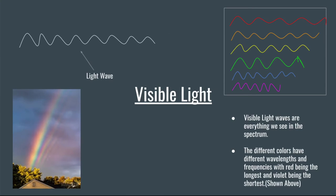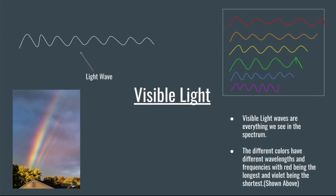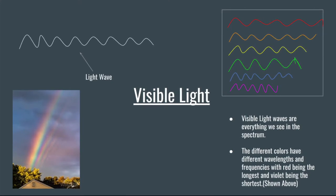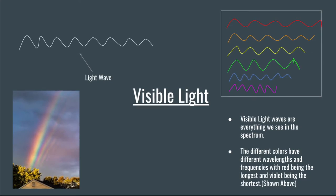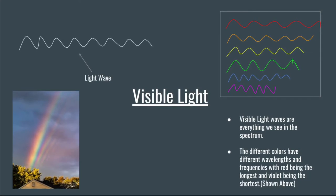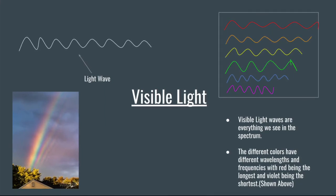Visible light rays have wavelengths from 400 nm to 700 nm and frequencies from 602 Hz to 1050 Hz. Visible light rays are the only part of the spectrum we can see. The different colors in the spectrum have different wavelengths and frequencies, with red being the longest and violet being the shortest. Visible light can help us see the clouds and predict the weather.